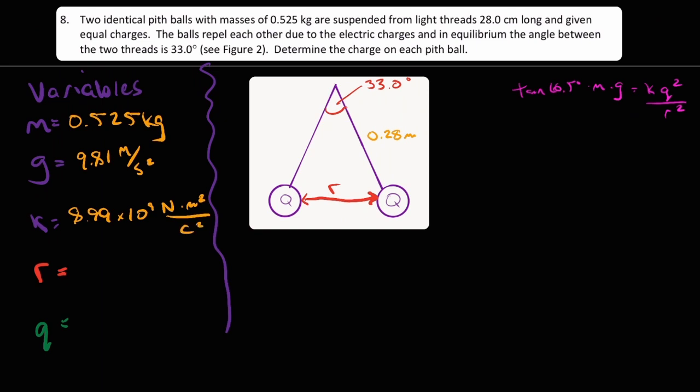We don't know r yet, but we can figure that out by looking at figure 2 here. We could use cosine law, but I'd actually prefer to split this in the middle, and after which we can just figure this side here and multiply by 2, and that will give us the total distance. So we'll just write 2 times sine 16.5 degrees times 0.280 meters to get a total of 0.159 meters.